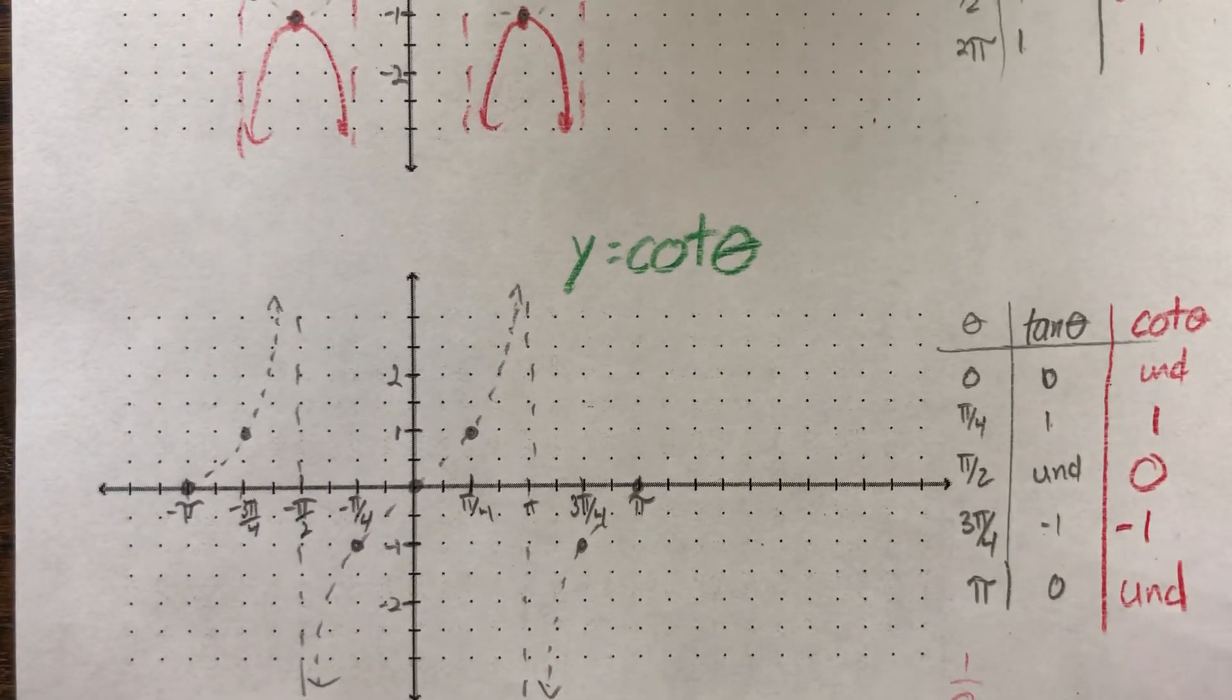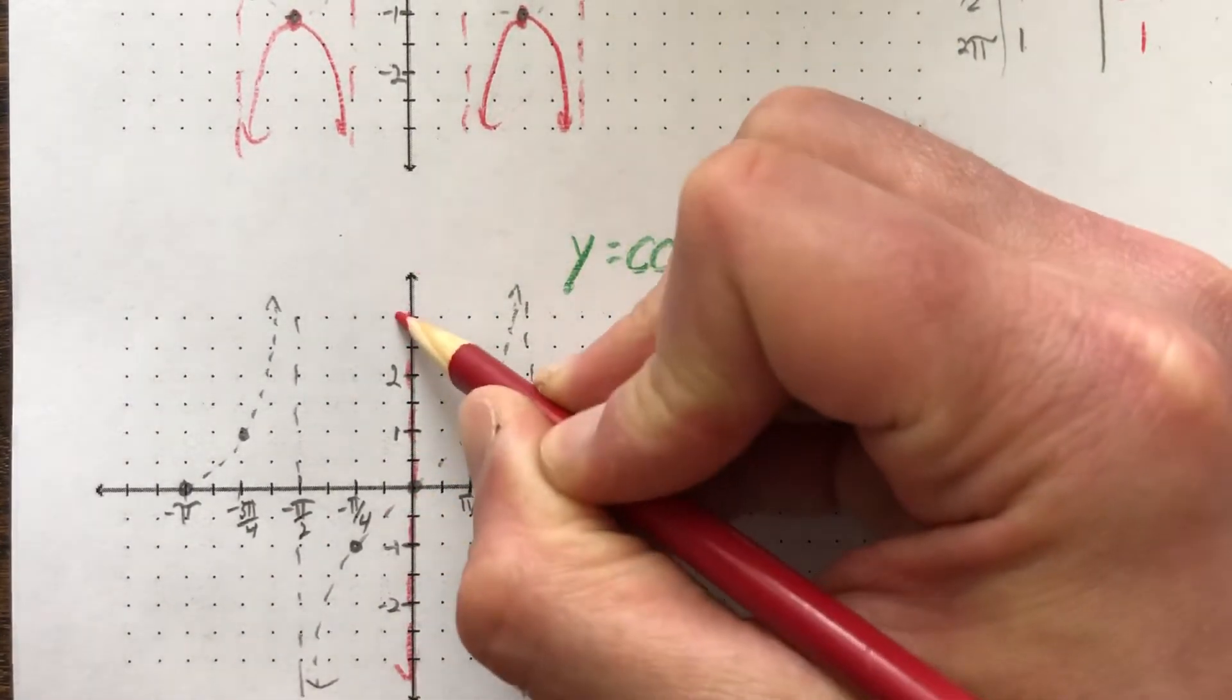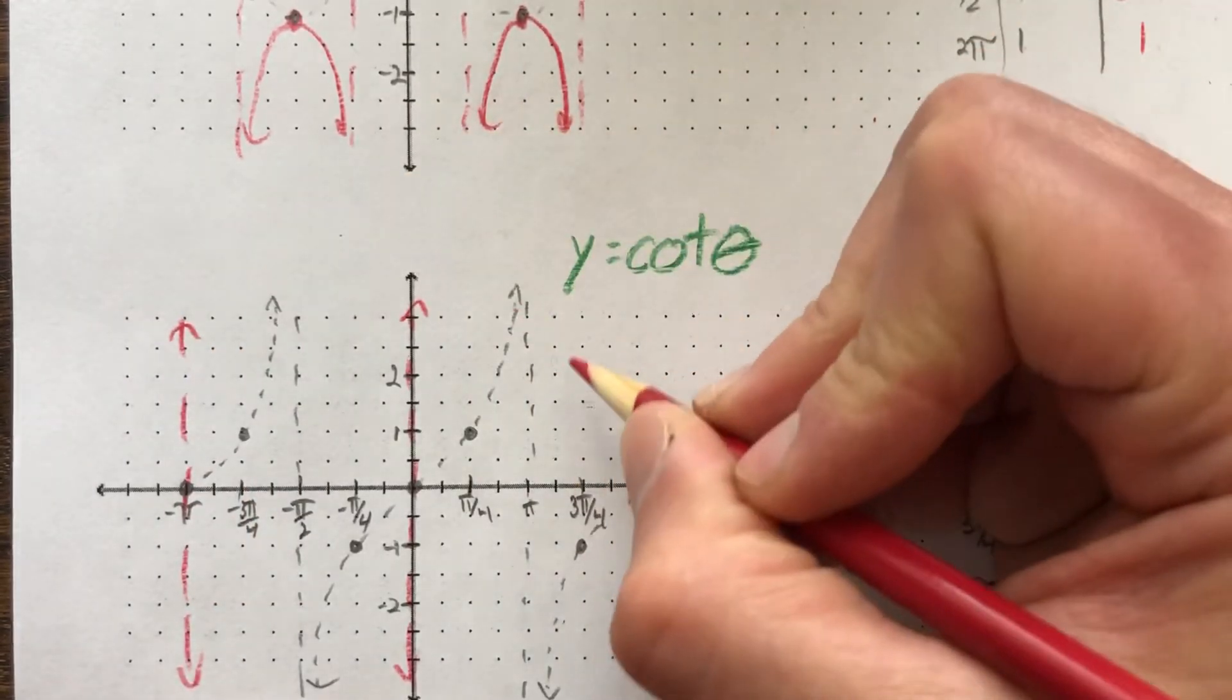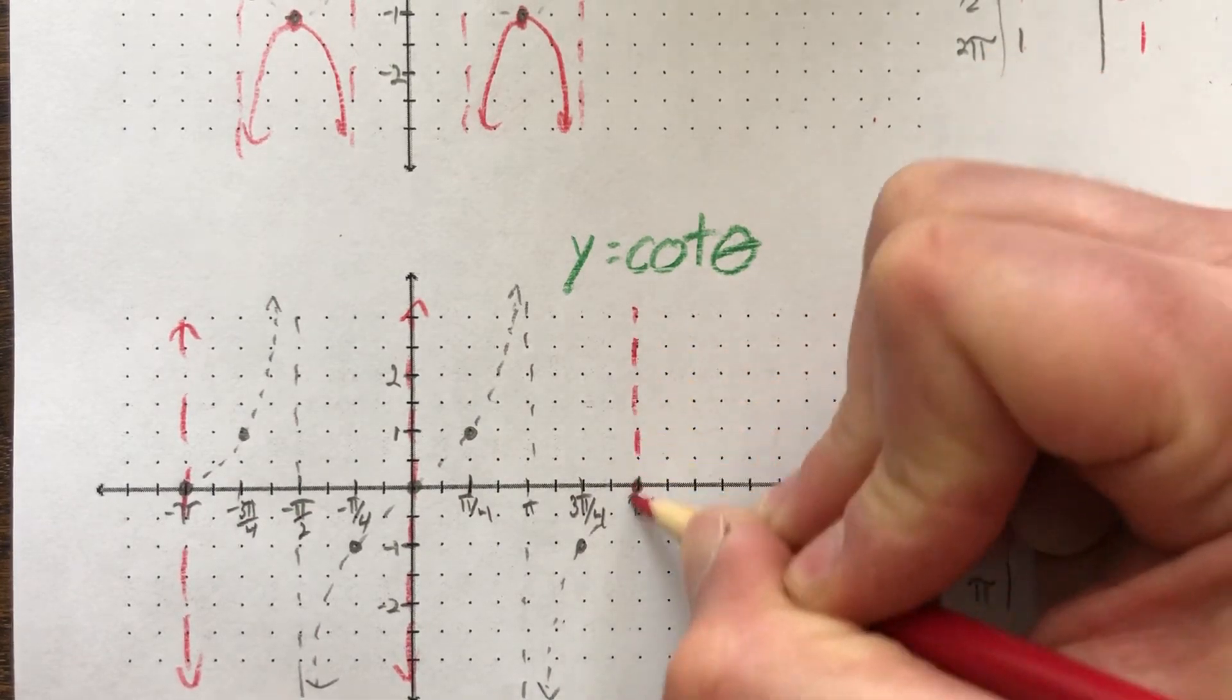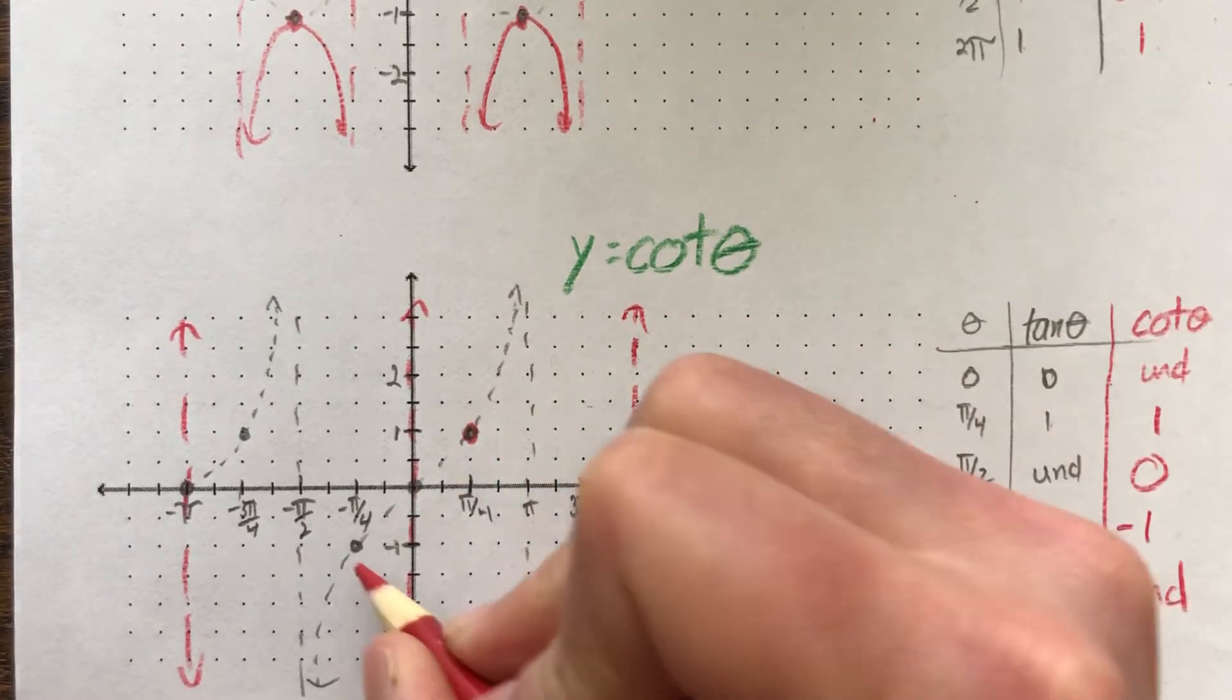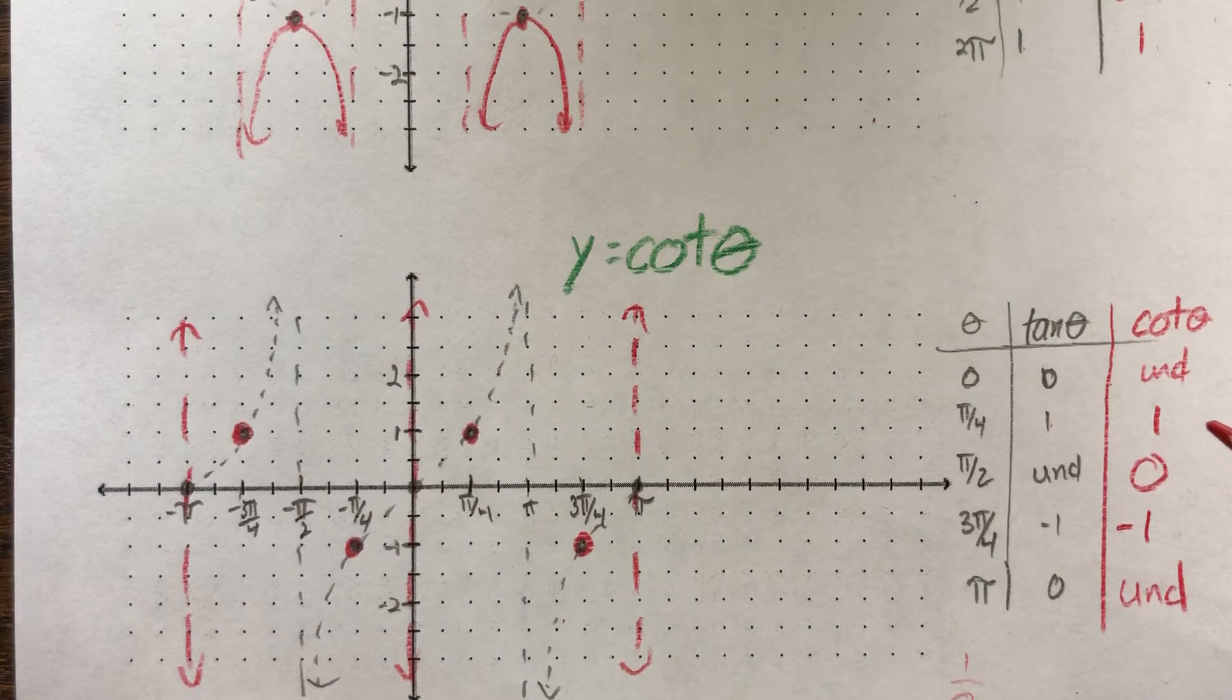Now, same idea. When you go to graph, where you had 0s, you now have undefined. That's the same as it was before. Where else is it? Oh, here we go. Okay. These points are staying the same. Okay.